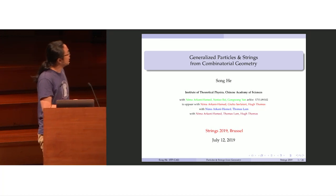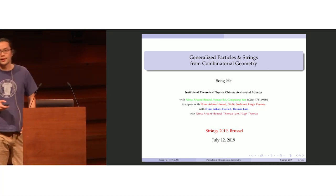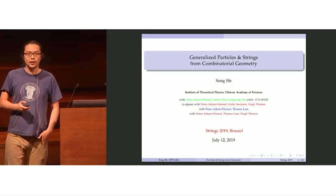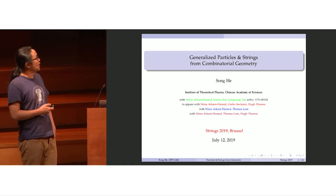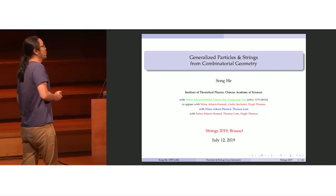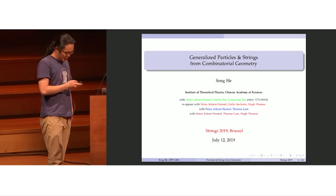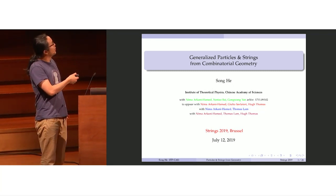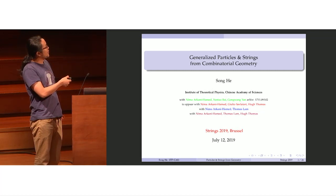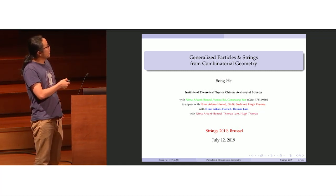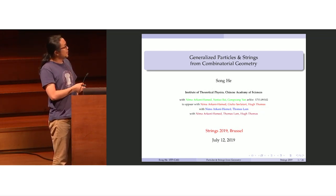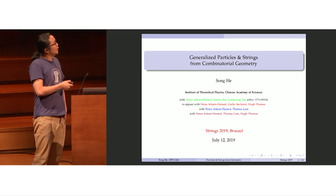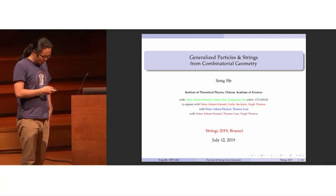What I'm going to talk about today is how scattering amplitudes of particles, strings, and some generalizations of them all arise from combinatorial geometry. This is based on work done with Nima Arkani-Hamed, Yong-Tao Bai, Guo-Wang Yan in this paper, and more to appear with Nima and two mathematicians, Hugh Thomas and Thomas Lam, as well as Julio Salvatori.